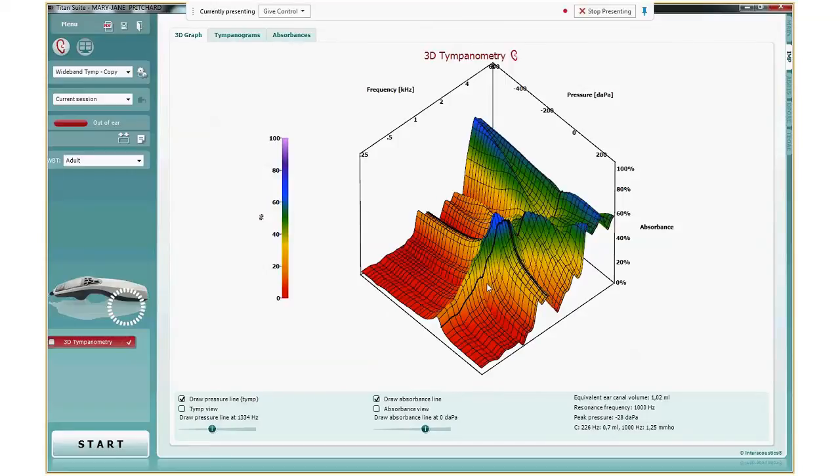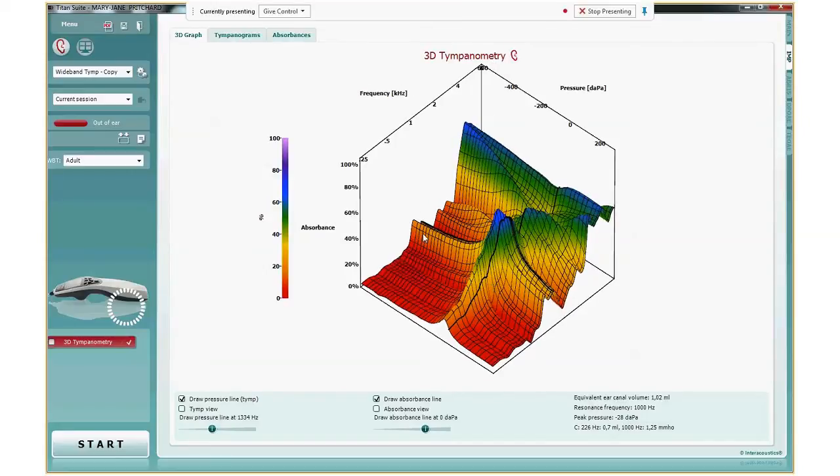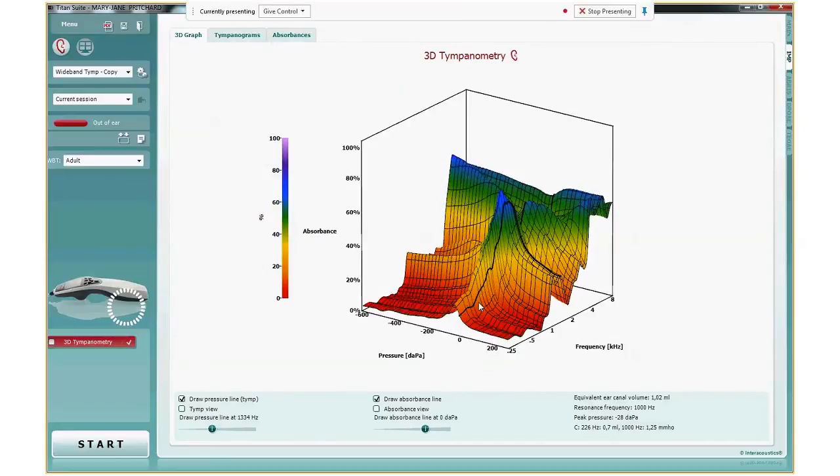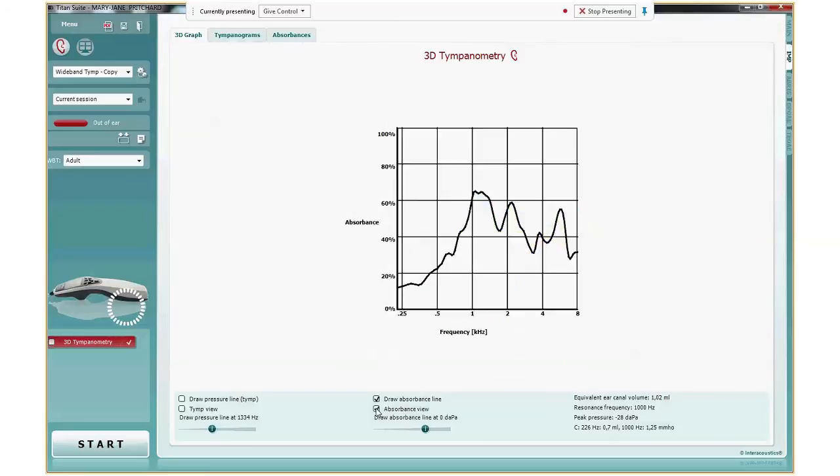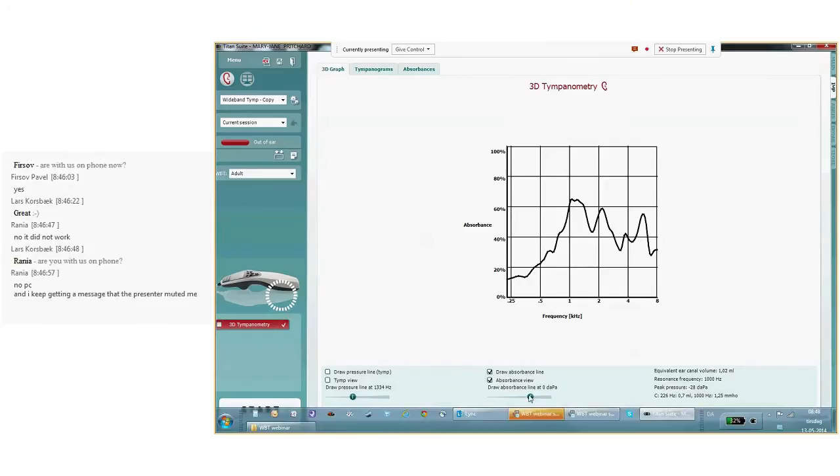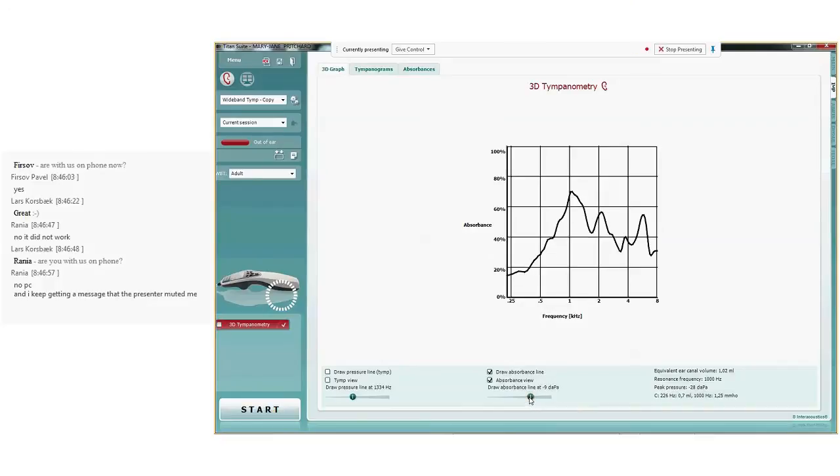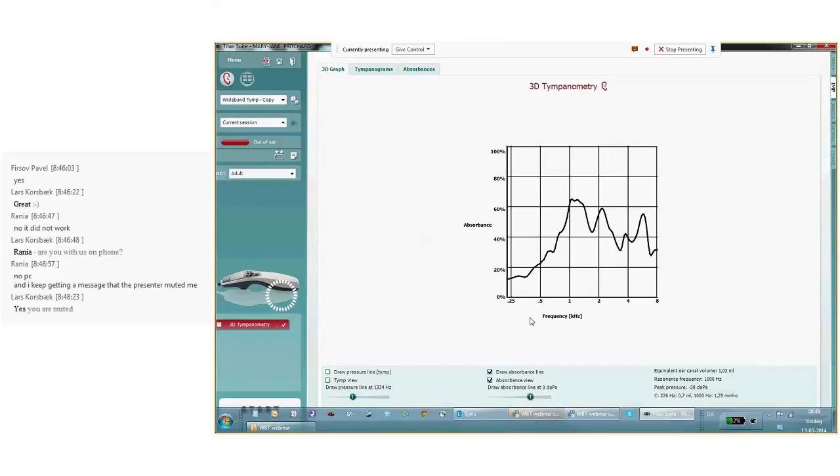I go back to the 3D graph in the Titan Suite. So far I only showed the tympanograms. And we can see there is also a line in the other direction. And I can isolate that line by clicking absorbance view, like this. Here we see the absorbance as function of frequency, and the absorbance is taken at 0 dkPa, so this is at ambient pressure. And I can move it, for example, to my peak pressure. My peak pressure is just next to it at minus 28. But at peak pressure and at ambient pressure, that is the most interesting slices to look at.